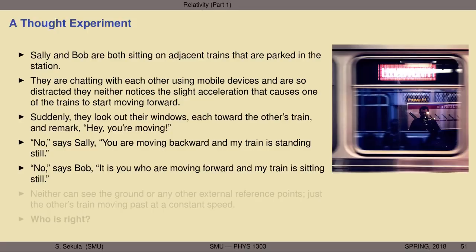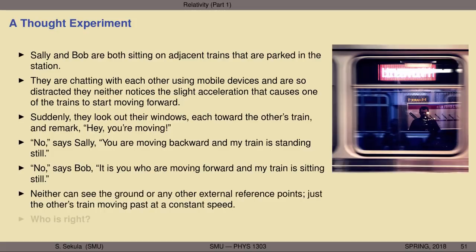The reason they have a disagreement at all is that neither of them noticed the acceleration that started one of the trains moving. The train that's moving is now doing so at a constant speed, so there are no sudden surges that can tell one of them their engine's powered up. Neither of them can see the ground or any other external reference points — they can't see the platform, can't see a lamp post fixed to the ground. All they can see is the other person's train moving past them, either eastward or westward, at a constant speed.